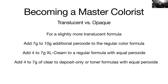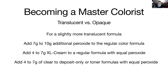For a slightly more translucent formula, here's what we were taught many years ago at color institutes around the U.S. and by the manufacturers: you could add a little extra developer to a formula to get it slightly more translucent or slightly lighter. It's the same color formula, but because you add between seven and ten grams of peroxide, it becomes a slightly lighter version of the color.